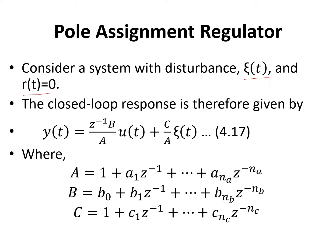The closed-loop response is given by y(t) equal to z^(-k) B over A times u(t) plus C over A times zeta(t), where A equals 1 plus a1·z^(-1) plus ... plus a_na·z^(-na), B equals b0 plus b1·z^(-1) plus ... plus b_nb·z^(-nb), and C equals 1 plus c1·z^(-1) plus ... plus c_nc·z^(-nc).